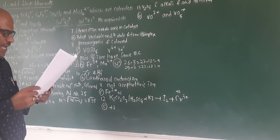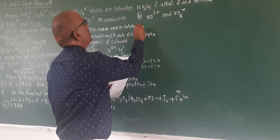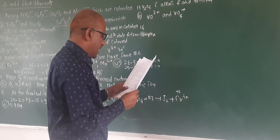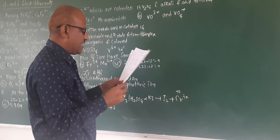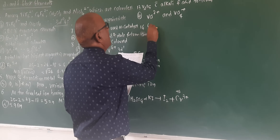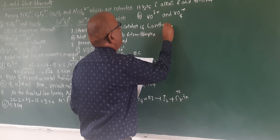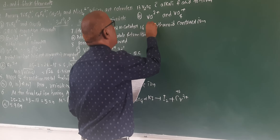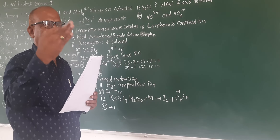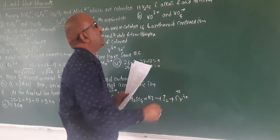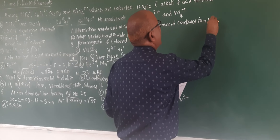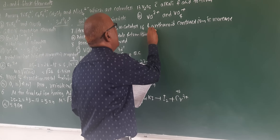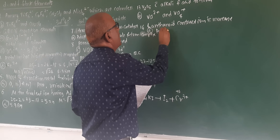Question 14: lanthanide contraction is due to what? Lanthanide contraction is defined as the small decrease in atomic size with increase in atomic number. Therefore, lanthanide contraction is due to the increase in atomic number.